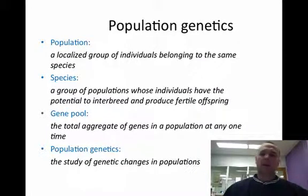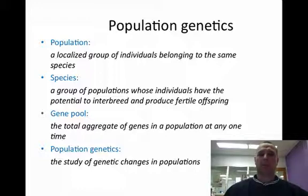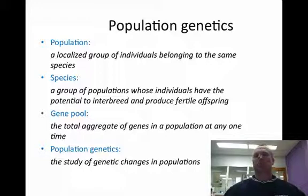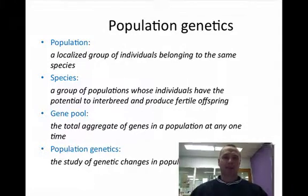When we talk about population genetics, there are four or five terms we need to know. We need to know what a population is — it's a group of individuals of the same species that live together. A species is a group of populations that interbreed with one another. The gene pool is the total aggregate of all the genes and all the alleles found in that population. And population genetics is, of course, the study of genetic change in populations.